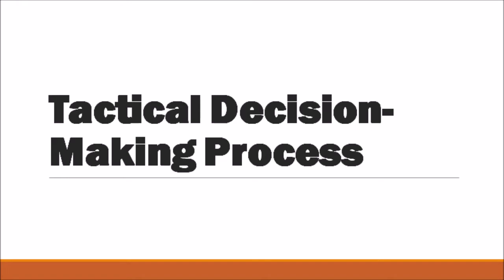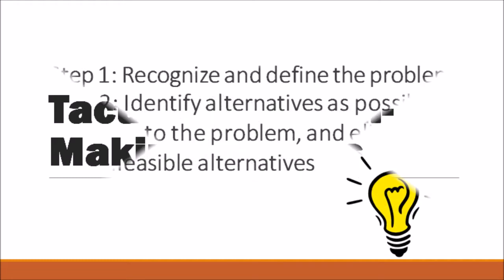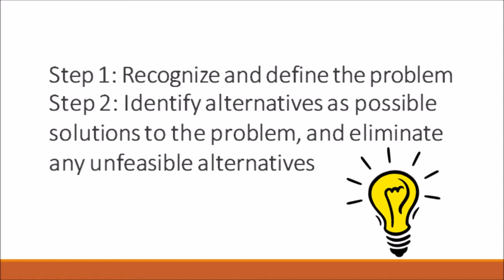Now let's move on to the tactical decision making process, which will be discussed step-by-step. Step one: recognize and define the problem — identify what the problem is. For example, if we're losing a lot of profit, we're considering whether to shut down or continue operations, and what would be the effect of that decision on the overall company.